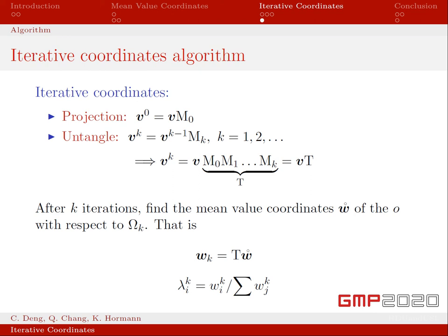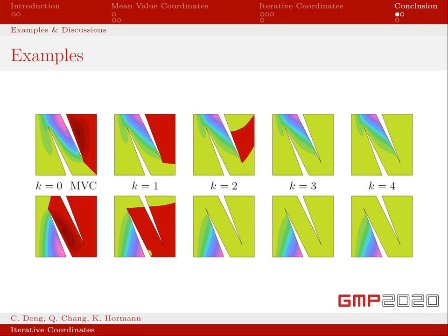Here, this N-shape example shows that as the iteration progresses, the negative coordinate region gradually disappears.